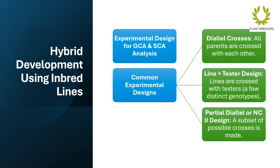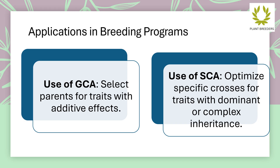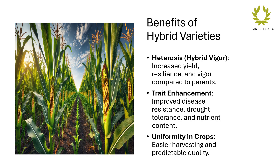Experimental designs for GCA and SCA analysis include: dialel crosses, where all parents are crossed with each other; line times tester design, where lines are crossed with testers — a few distinct genotypes; and partial dialel. GCA is used to select parents for traits with additive effects, while SCA is used to optimize specific crosses for traits with dominant or complex inheritance.